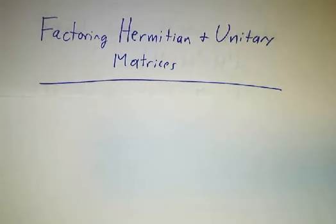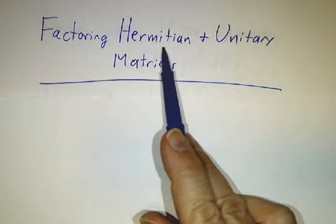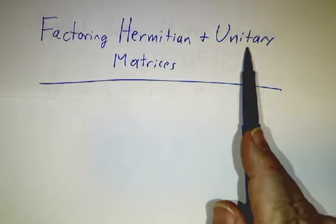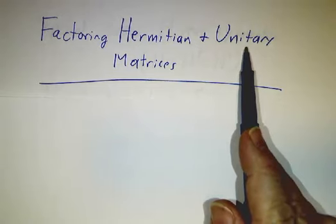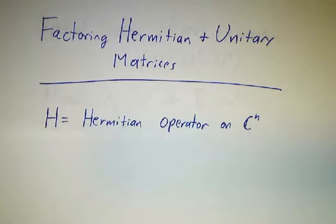In previous videos, we looked at the eigenvalues and eigenvectors of Hermitian matrices - the eigenvalues are real and the vectors are orthogonal - and unitary matrices, where the eigenvalues are on the unit circle and the eigenvectors are orthogonal. Now we're going to revisit this question in terms of matrix factorizations and see what Hermitian matrices and unitary matrices have to do with one another.